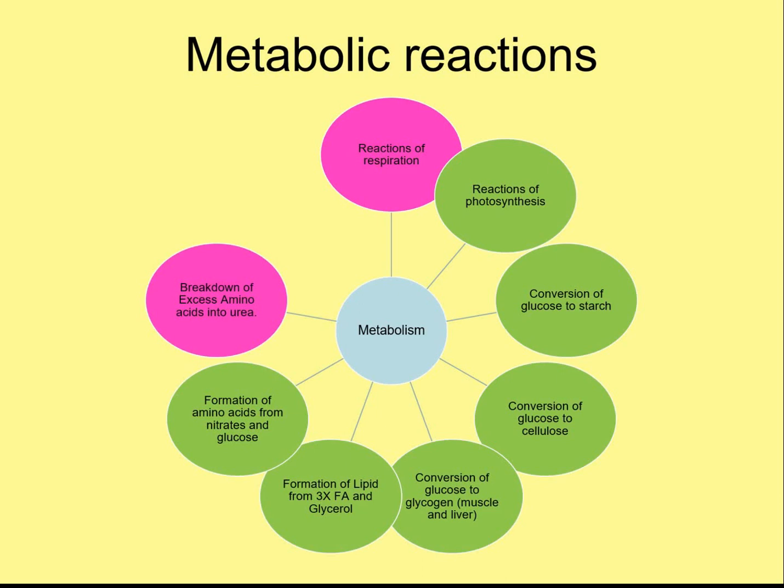You could have protein synthesis there too. Breakdown of excess amino acids — in humans and most animals, if we eat too much protein and can't use all the amino acids, our body has to break them down. We can't store amino acids unless we're going to use them to make proteins. If we break amino acids down, we make a toxic chemical called urea, and then we excrete that from the kidneys. The breakdown of amino acids actually occurs in the liver.